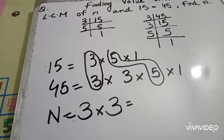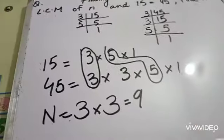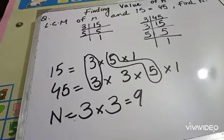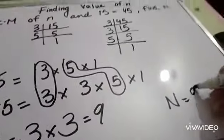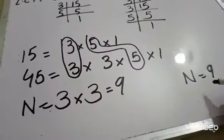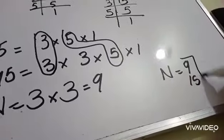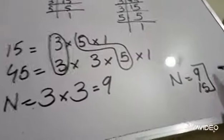So 3 multiply by 3 is equal to 9, so the value of n is equal to 9. N is equal to 9 and 15, then you will get the value of 45.